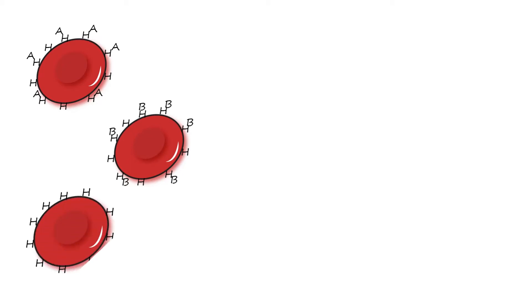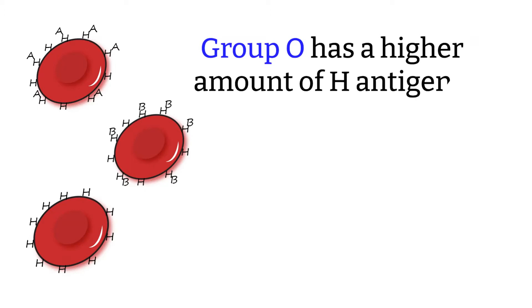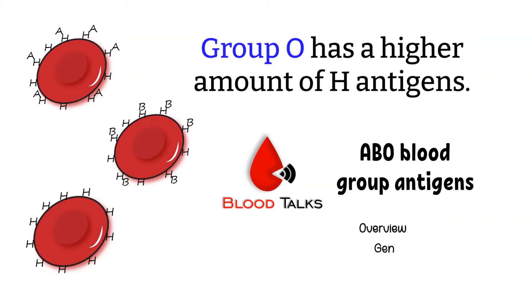A person with blood type A, B, and O all have H antigen, but the expression is more or less depending on the blood type. For instance, a person with group O blood type has a higher expression of H antigen on the RBC than an individual with type A or B, because the H antigen does not get converted to A or B antigen. You can find more details about this in the ABO blood group antigen video.